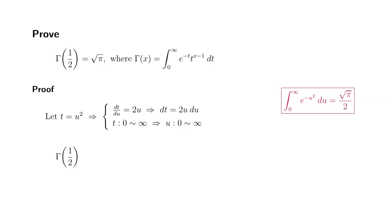So we have gamma of 1 half. By following the definition, simply we put 1 half where the x is, so we have this integral here.